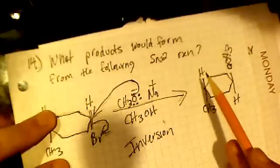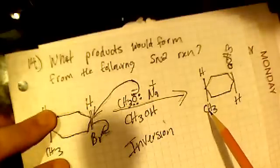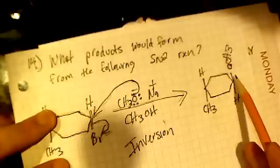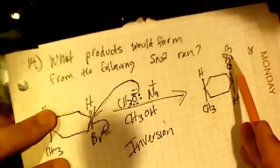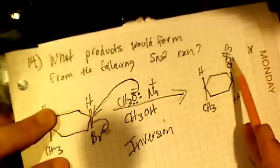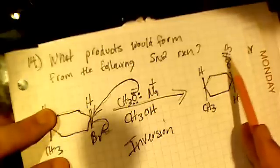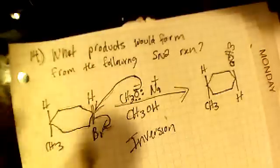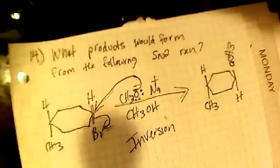So the CH3 stays on the same side, and this becomes an ether. The OCH3 comes up on top, and the H goes to the bottom, so this becomes a trans molecule — it's an SN2 inversion.